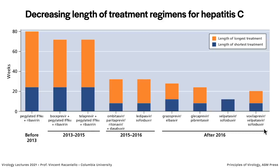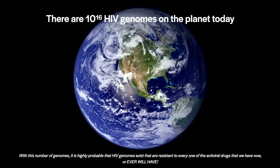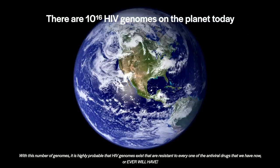A single SARS-CoV-2 drug won't last long given the mutation rate of this virus — we need more than one. Molnupiravir is promising but resistance will emerge soon after it starts being used. We have 10^16 HIV genomes on the planet, so resistance to everything we have is already out there, which is why we sequence the genome before treating. For many other viruses, resistance will continually be a problem — making combination antiviral approaches critical for the future.